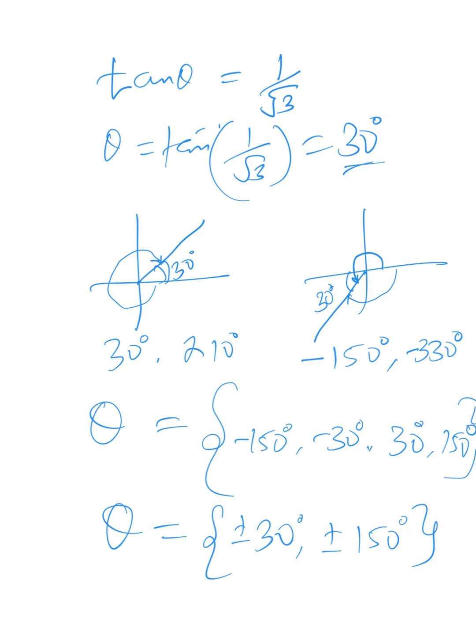So if you are solving a trigonometric equation: first, analyze the nature of the ratio — positive or negative. If it is positive, go to the quadrants where that ratio is positive; if it is negative, go to the quadrants where the ratio is negative. Next, get the inclination — that is where many students struggle, and that is why I am going to do many more examples.